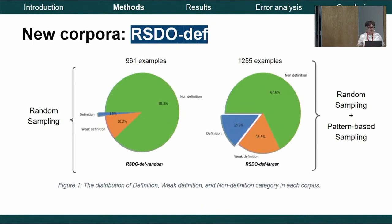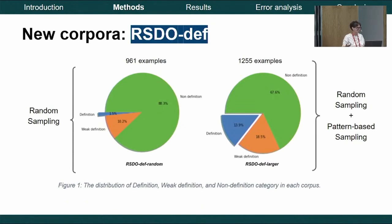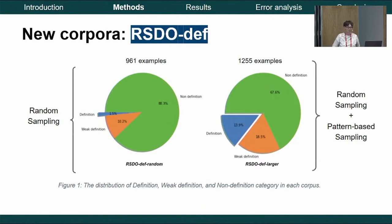The datasets are highly imbalanced — not surprising, since even in real scenarios only very few sentences in a corpus are definitions. With 1,000 sentences and a very small percentage of definitions, statistical results are not reliable for evaluation. We used pattern-based sampling to extend the number of definitions, producing a larger corpus with at least 13% definitions and 18% weak definitions. Since patterns were used in collection, they could not be used in evaluation, so we created new benchmarks.